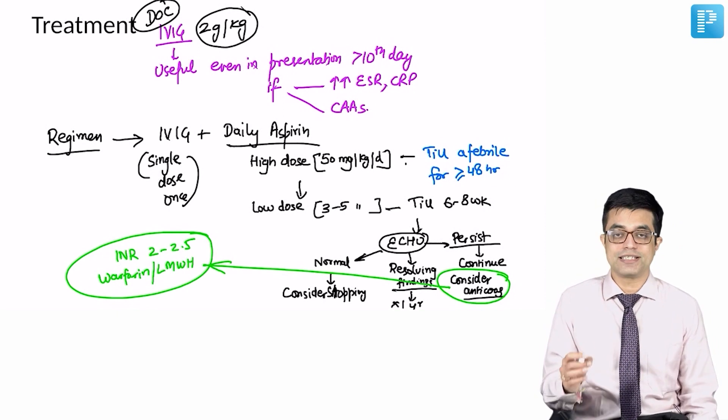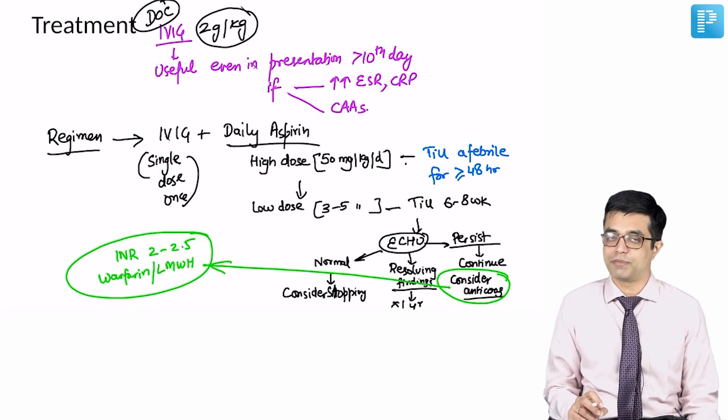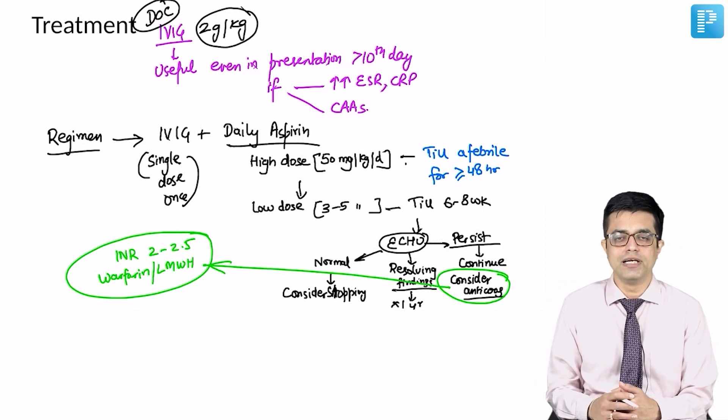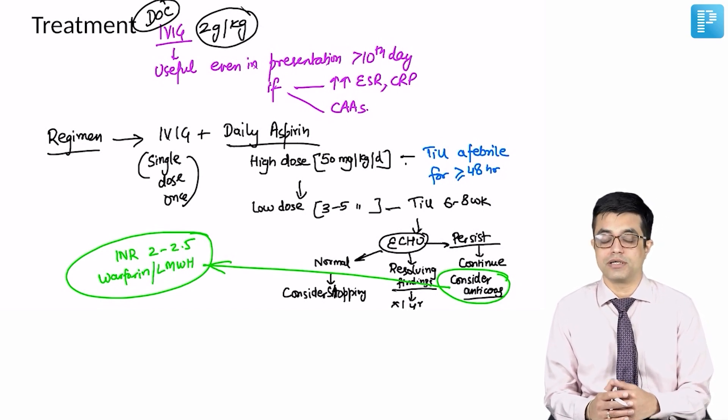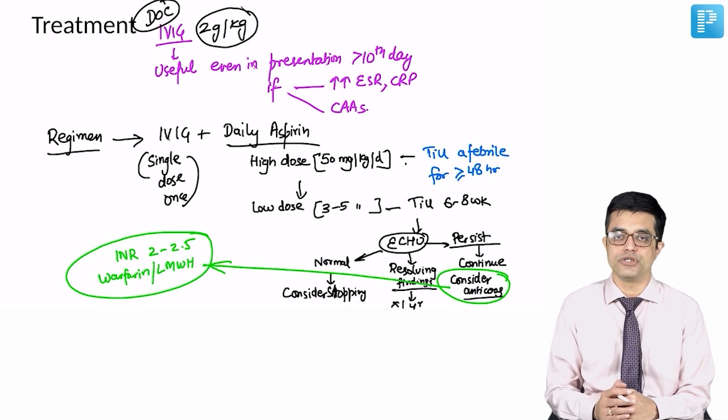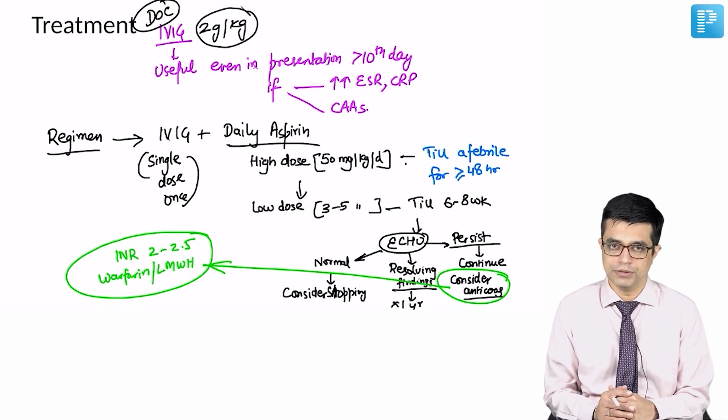And the best antiplatelet agent is aspirin. If aspirin is not available or not tolerated, you can go in for clopidogrel as well. But clopidogrel is not as efficacious as aspirin and the use is only off-label.